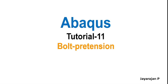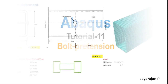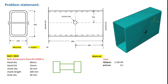Let us first go through the problem statement. This tutorial uses a simple model which is essentially a standard hollow section of dimensions 200 mm wide by 400 mm deep, with a thickness of 10 mm and root radius of 10 mm. It has a total length of 600 mm. Both ends of this tube are pinned, and it is provided with a bolt of M24 diameter at the center, which will be pretensioned.